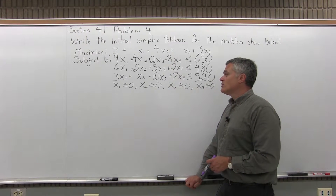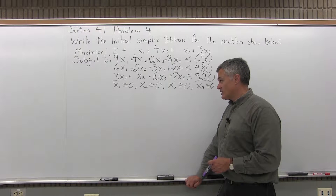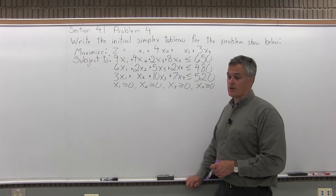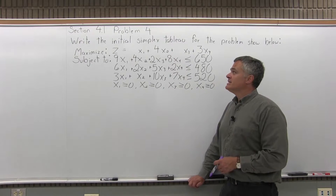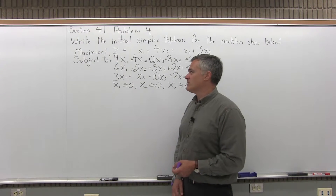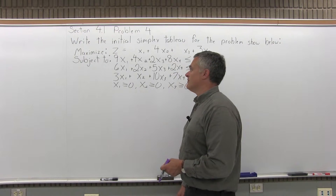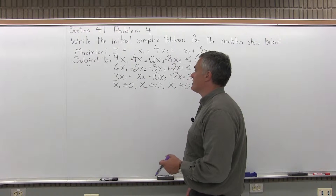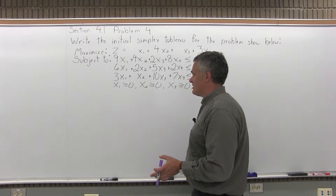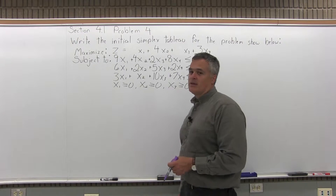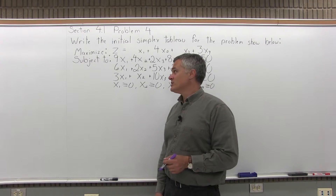And then x1, x2, x3, and x4 are all greater than or equal to 0. When they say write the initial simplex tableau, they mean write the first matrix for this problem. Each one of the constraints, other than the greater-than-or-equal-to-zero ones, has to be changed from a linear inequality to a linear equation.